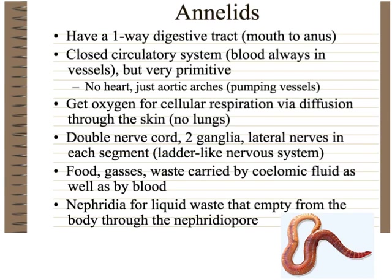Let's start with the annelids. The earthworm is an annelid, and you can see the segmentation — each of the little segments on that worm. Annelids have a one-way digestive tract: food goes in the mouth and moves through the body toward an anus and out. It does not back up. In the animal kingdom, not everybody has a one-way digestive tract, so we'll see a group that doesn't.